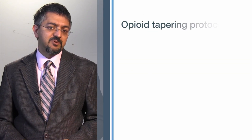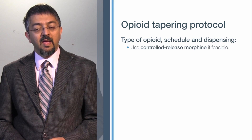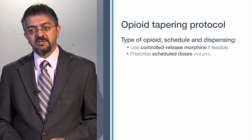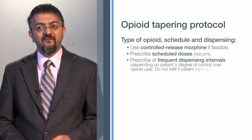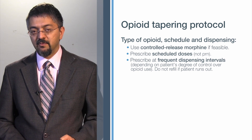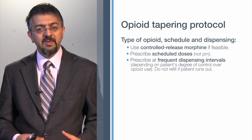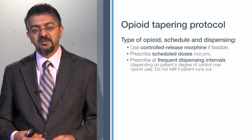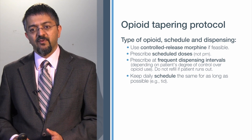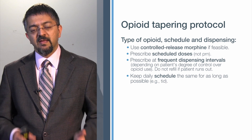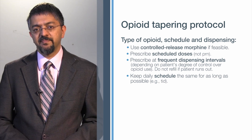In deciding how to prescribe that morphine, it is ideal to use controlled-release morphine if feasible. More importantly, prescribe scheduled doses based on time — not in response to the appearance of pain. Prescribe at frequent dispensing intervals — daily, alternate days, or weekly — depending on the patient's degree of control over their opioid use. Be clear with the patient that there will be no refills should they lose the prescription or run out early. Try to keep the same daily schedule; for example, if they were taking it three times a day, maintain that before moving to a twice-a-day schedule of controlled-release morphine.